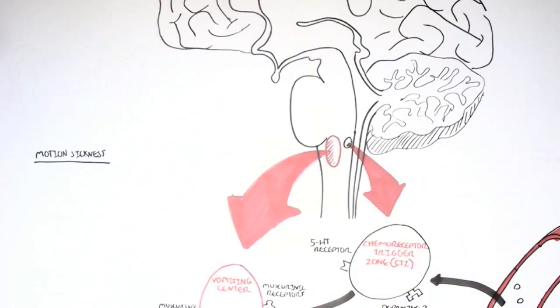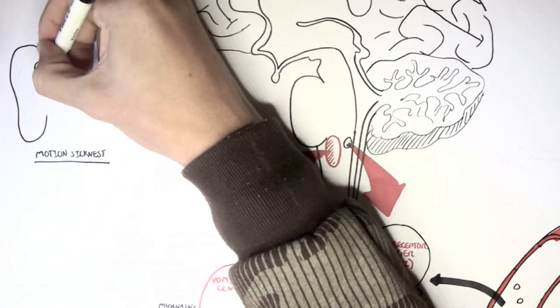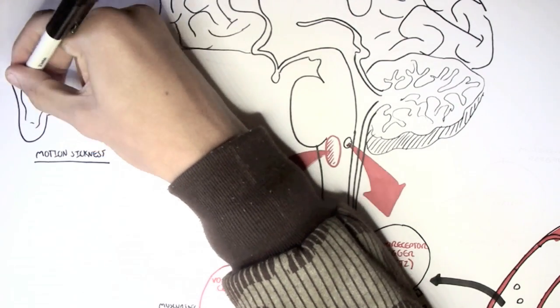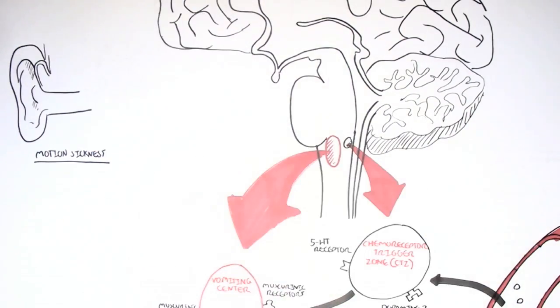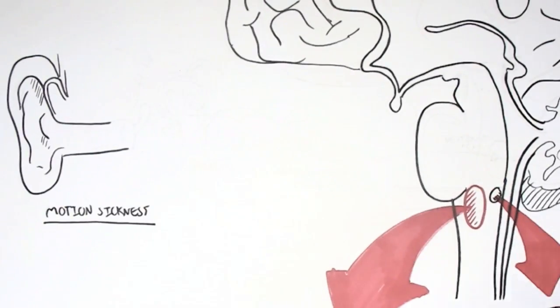So motion sickness related vomiting. How does motion sickness cause us to vomit? Let's have a look. Well, here we have the human ear, the outer ear, middle ear, and inner ear. In the inner ear, we have what's called the labyrinth, where the cochlea is, where we have hair cells, which allow us to hear.